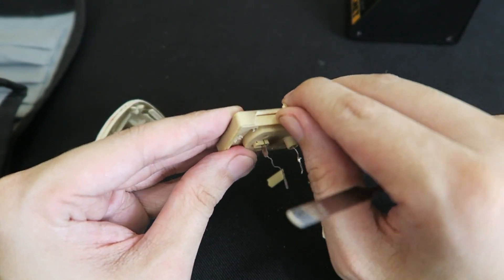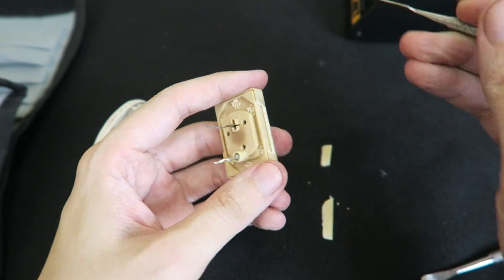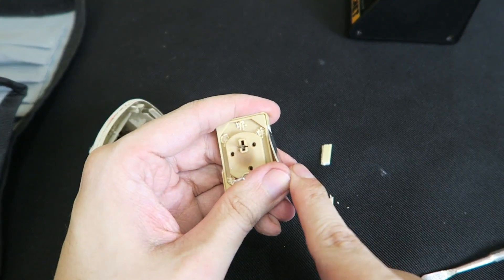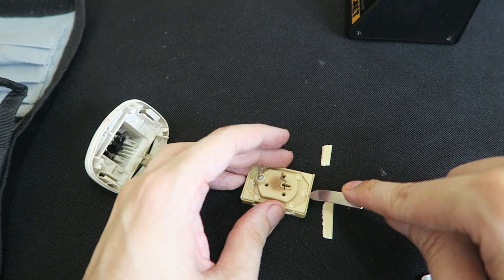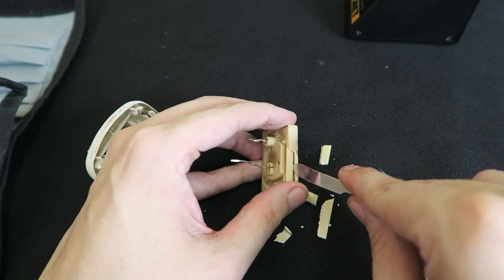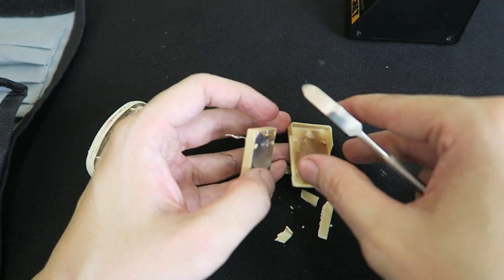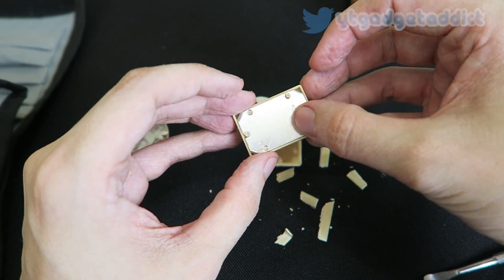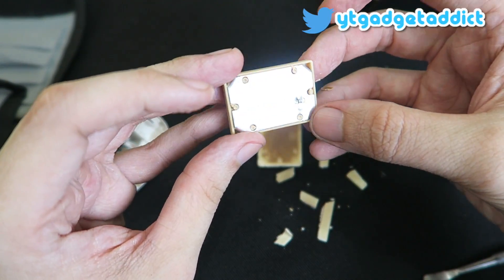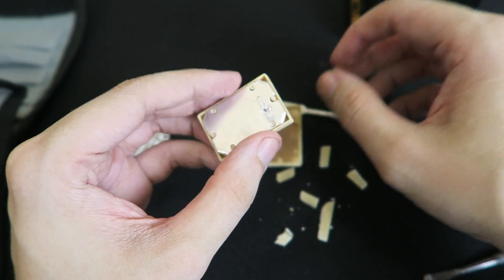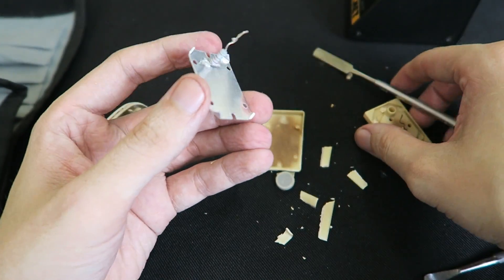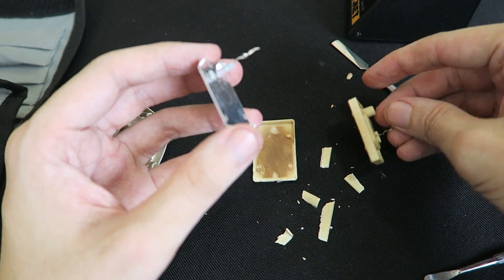It is a shame to break this because they really do work so well but I just have to see what's inside and fortunately they're very very cheap. I have to say the materials all feel pretty decent really. Okay so now we've got a metal plate but can we see what's under the plate? Aha that's all it is. A resistor.